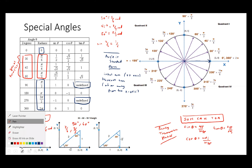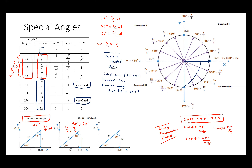The terminal arm is the other ray that is a rotation away from the initial arm. I'll make the initial arm blue and the terminal arm purple. If the initial arm and terminal arm were on top of each other, this would be zero degrees. The terminal arm is some degree of rotation away from the initial arm.